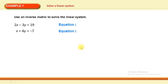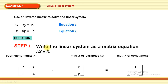For example, we have a system of linear equations: 2x - 3y = 19 and x + 4y = -7. To find the solution, first write this system in matrix form Ax = B, where A is the coefficient matrix [2, -3; 1, 4], x is the variable matrix [x; y], and B is the constant matrix [19; -7].